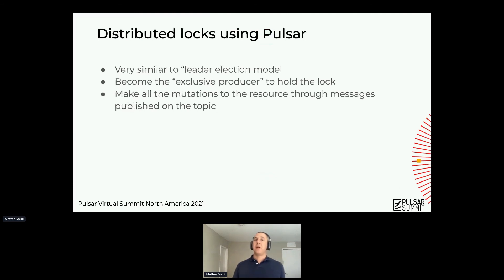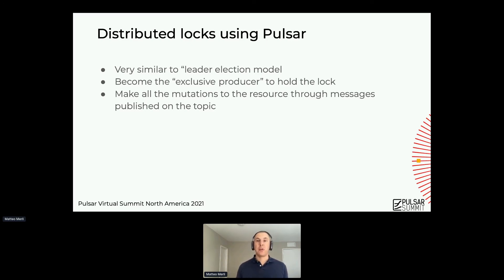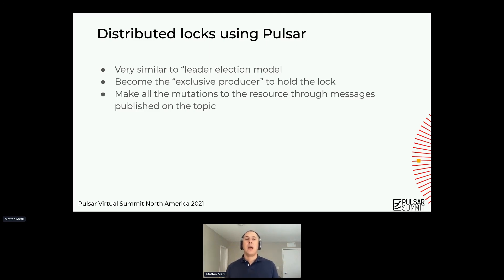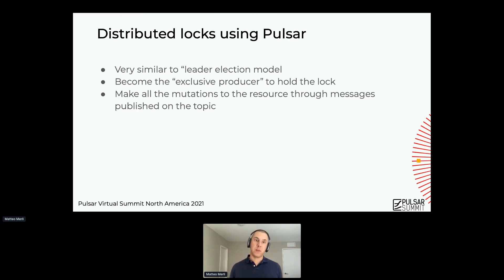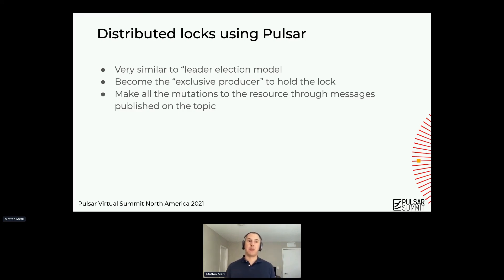Similarly, if you want to do distributed locks using Pulsar, you create an exclusive producer and if you are successful, you are the owner of the lock. You just have to make sure that all mutations to the resource are done through messages published on the topic. Therefore you get the advantages of fencing coming naturally.